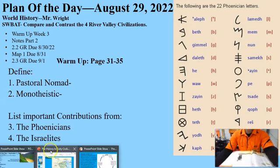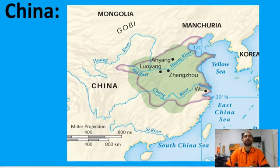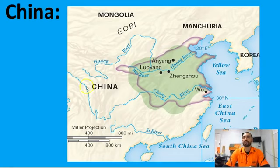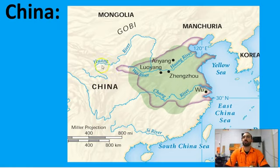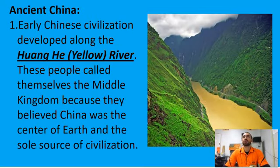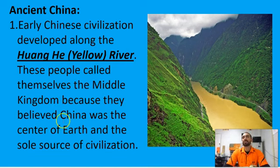Now let's move on to our notes. China's geography greatly shaped its history. China had the Gobi and Taklamakan deserts to the north and west, the Mongol grasslands to the north, the Pacific Ocean to the east, along with the Korean Peninsula and the Japanese islands. The Himalaya Mountains and the jungles of Southeast Asia made frontiers on the south and west sides. The two most important rivers of China are the Huanghe, or Yellow River, and the Yangtze, or Chang River, in central China. Early Chinese civilization developed along the Huanghe, or Yellow River. Early Chinese called themselves the Middle Kingdom because they believed that China was the center of the earth and the sole source of civilization.